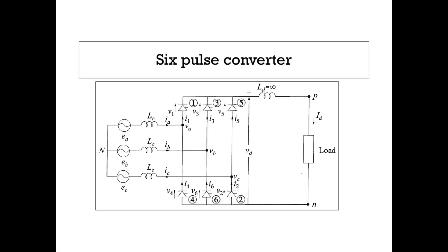This is the circuit diagram of a 6-pulse converter. It consists of 6 SCRs named 1, 3, 5 and 4, 6, 2. The upper 3 SCRs represent the positive group and the 3 SCRs at the bottom represent the negative group. This bridge is fed from a 3-phase AC supply consisting of three phase voltages EA, EB, and EC, which are the instantaneous values of phase voltages.